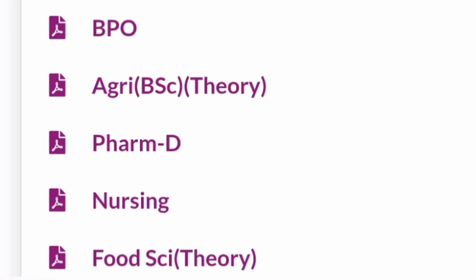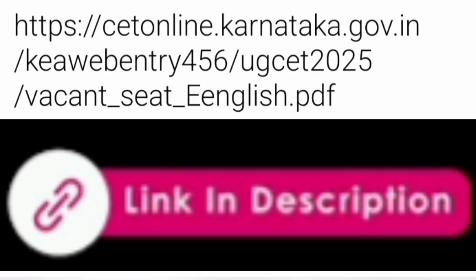Each of these PDFs are available. The direct link is cetonline.karnataka.gov.in/KEAweb/entry/UGCET2025-vacant-seat-matrix. I have also given the link in the description box — you can directly click from there to see the seat matrix, and in the different sections you will find all the types of PDFs available.